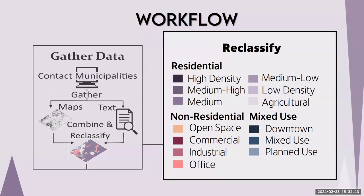We underwent a tiered reclassification process, deciding on three core zoning districts and 13 sub-zoning districts. We broke down our first core district — residential — into six sub-districts based on the number of dwelling units allowed per acre. Within our residential class, we include agricultural lands, as all agricultural lands in North Carolina also allow for low-density residential development. Our second core class — non-residential — breaks down into four sub-districts: open space, commercial, industrial, or office. Our final core zoning district is mixed use, which allows for any two or more uses, broken into three sub-districts including downtown areas and areas designated for future or planned use.